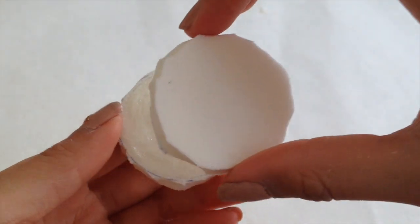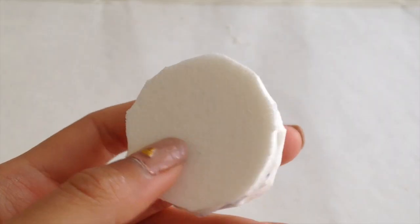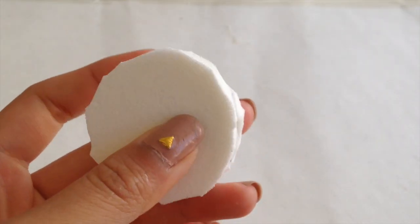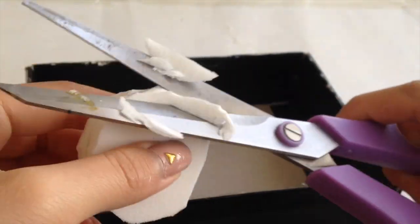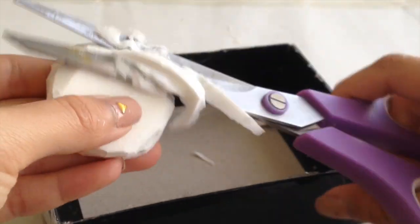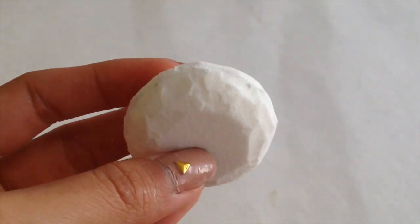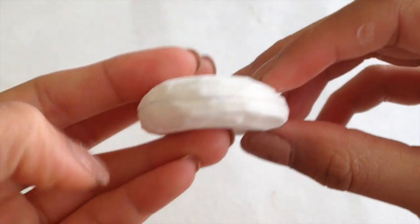First you are going to glue together your circular makeup sponges. And after the glue dries I am going to start shaping the cookie. So the side of the cookie should kind of look like this. And here is how mine turned out after all the shaping.